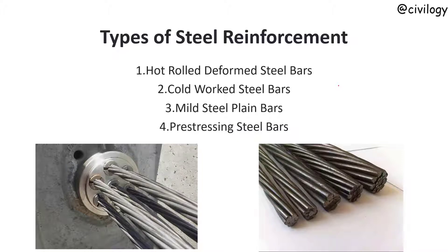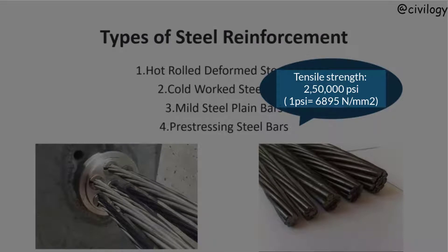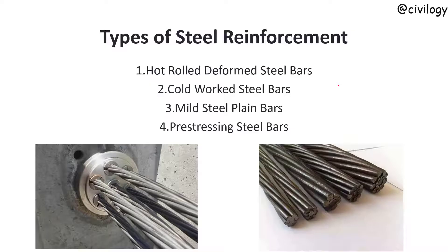Next, pre-stressed steel bars. Pre-stressing steel reinforcement is used in the form of strands or tendons. Multiple strands are employed in concrete to perform the pre-stressing action. The strands are made of multiple wires — either two or three wire strands — and the wires are cold formed, having a high tensile strength ranging from 250,000 to 270,000 psi. This high strength helps to effectively pre-stress the concrete.